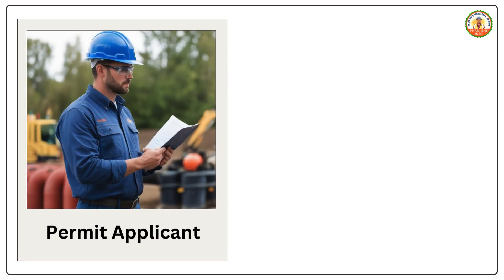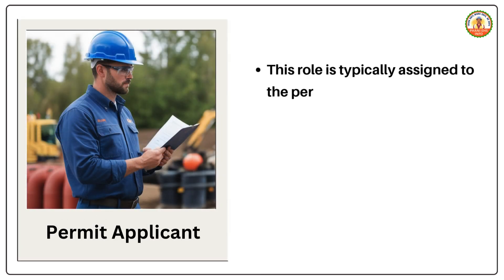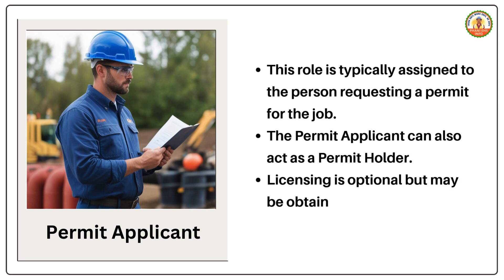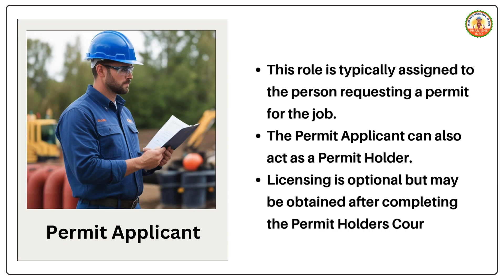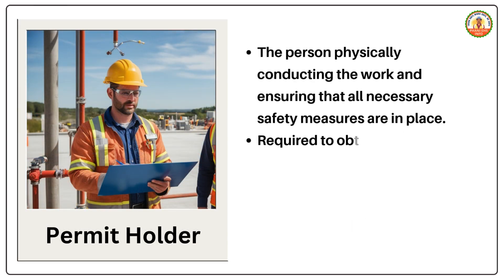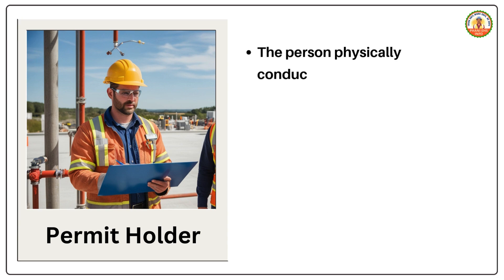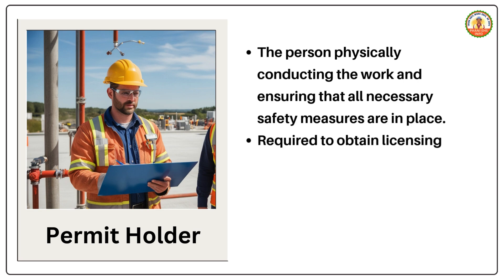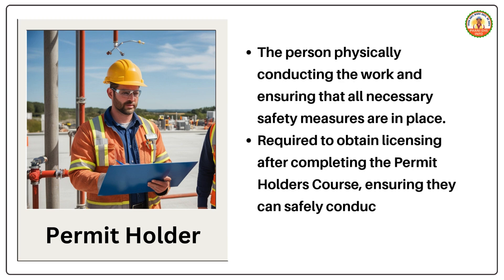Permit Applicant — this role is typically assigned to the person requesting a permit for the job. The permit applicant can also act as a permit holder. Licensing is optional but may be obtained after completing the permit holder's course. Permit Holder — the person physically conducting the work and ensuring that all necessary safety measures are in place. Required to obtain licensing after completing the permit holder's course, ensuring they can safely conduct work under the permit.